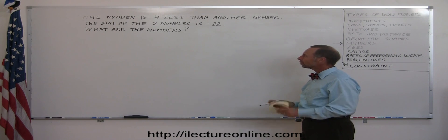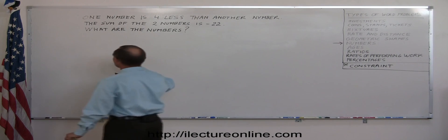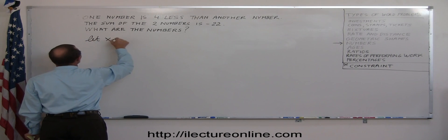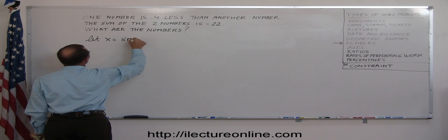So I have two numbers. One number is four less than another. So let x be the smallest number. Let x equal the smallest number.